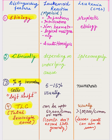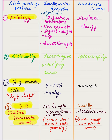Leukemoid reaction can be of two types: myeloid or lymphoid. In leukemoid reaction, we get immature myeloid precursors in the peripheral smear, and the etiology is mainly reactive — most commonly due to infections and intoxications. Uncommon causes include non-hematological malignancies like lung cancer, where it is part of paraneoplastic syndrome due to release of certain cytokines, and acute hemolysis can also sometimes cause leukemoid reaction.